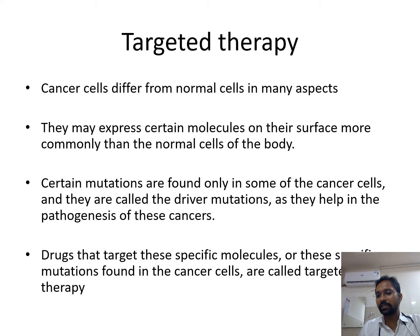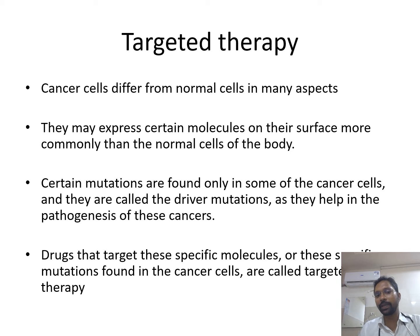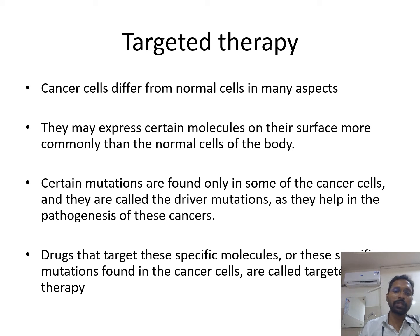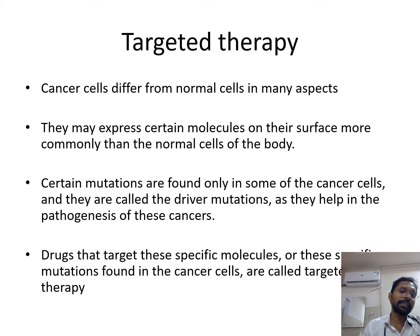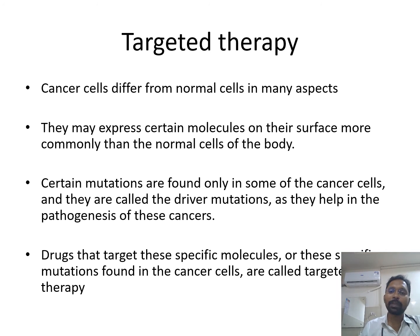Cancer cells, though they are cells of our own body, differ from normal cells in many aspects. They may express certain molecules on their surface more commonly than normal cells, and certain mutations found only in cancer cells are called driver mutations, as they help in the pathogenesis of these cancers. Targeted drugs specifically target these molecules or specific mutations more commonly found in cancer cells, achieving the killing of cancer cells while sparing normal healthy cells.